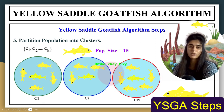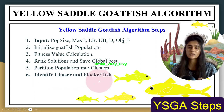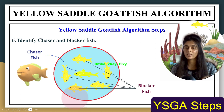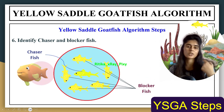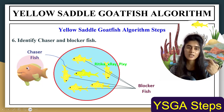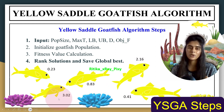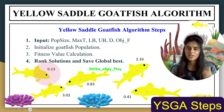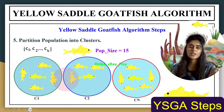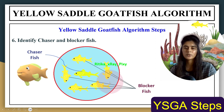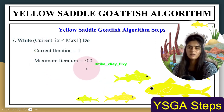Once clusters are formed, we identify the chaser fish and blocker fishes in each cluster. There is only one chaser fish per group. Based on the agents' fitness values calculated earlier, the agent with the best fitness value in each cluster is designated the chaser fish, and the remaining agents are blocker fishes.